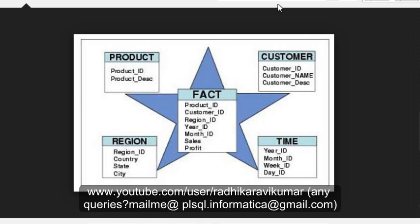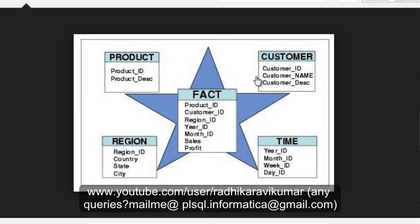I've googled the star and snowflake schema and got this random image which is in front of you right now. You can see the shape of these tables is in star form — that's why it's called a star schema. In star schema, as represented here, the fact table resides in the middle and is surrounded by dimensional tables.